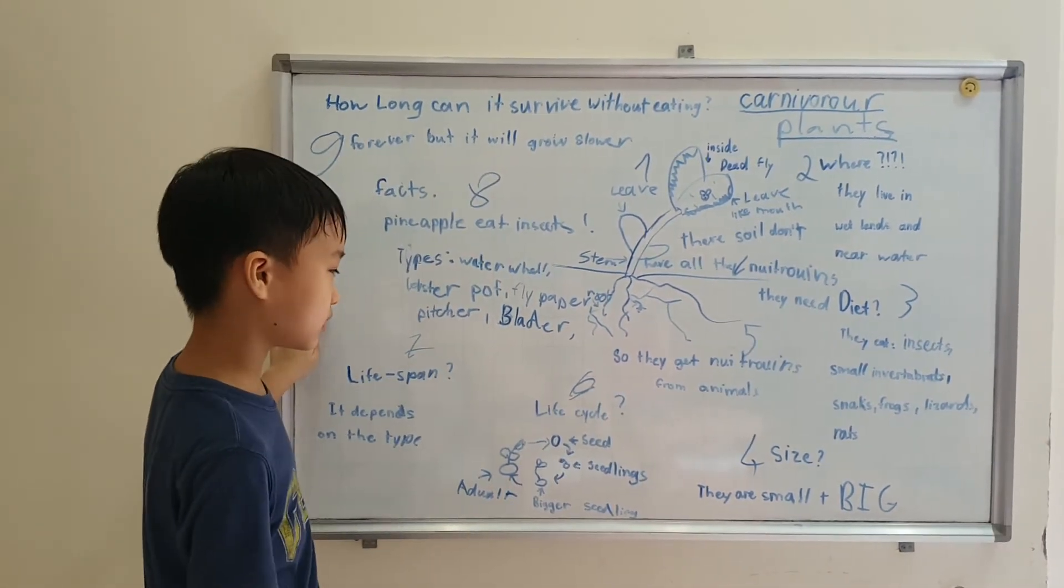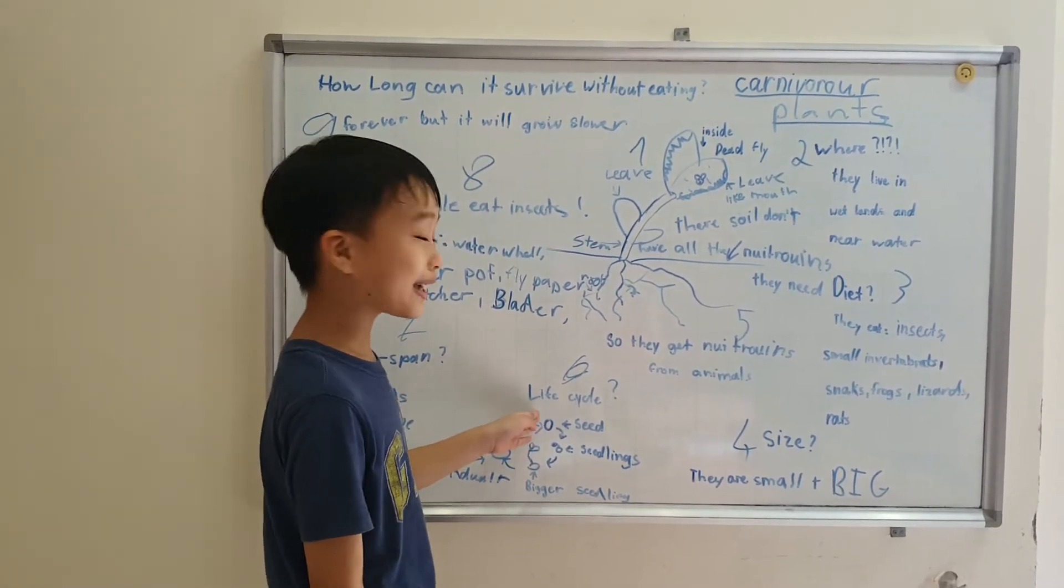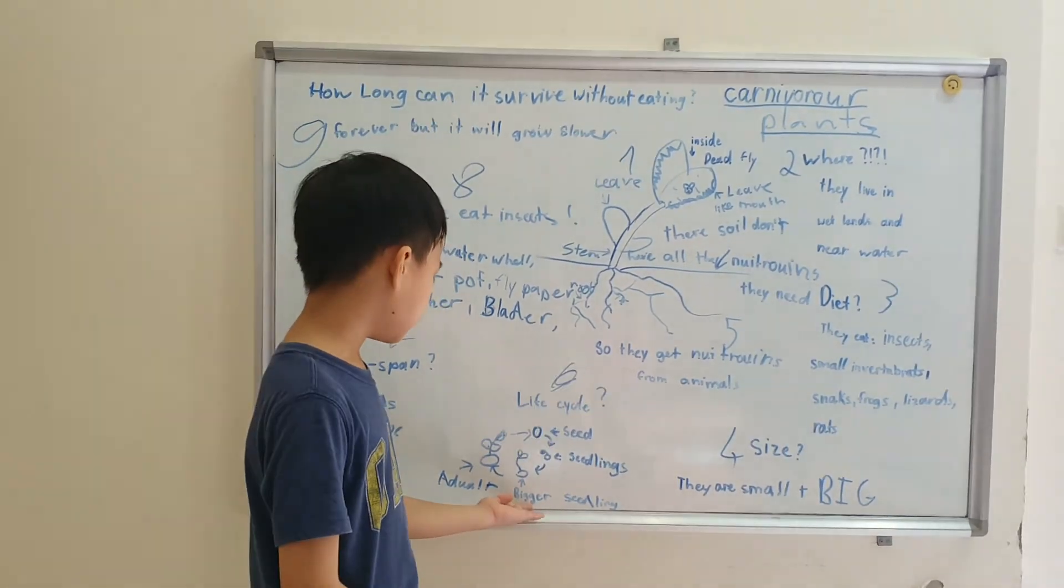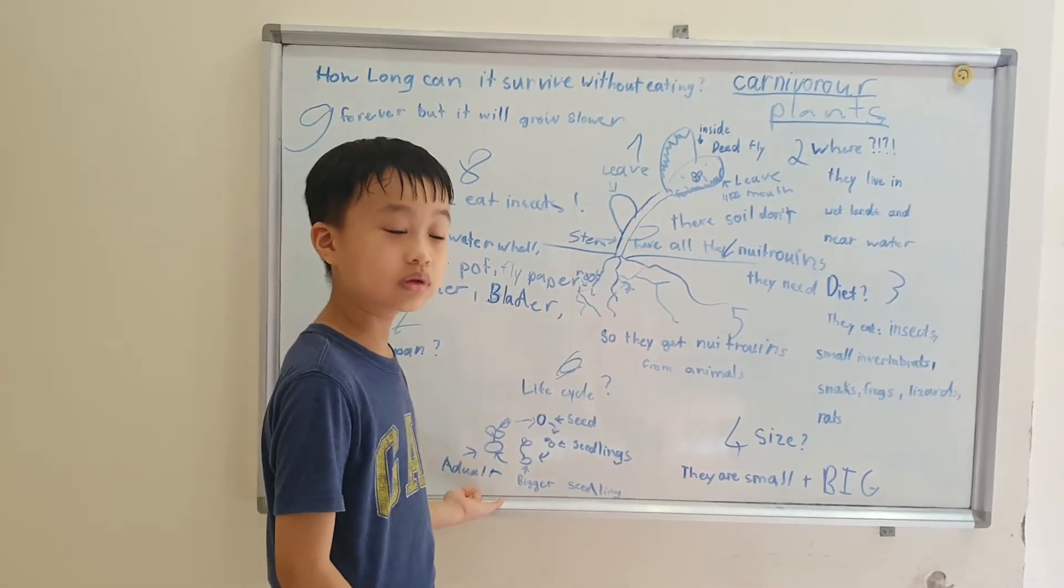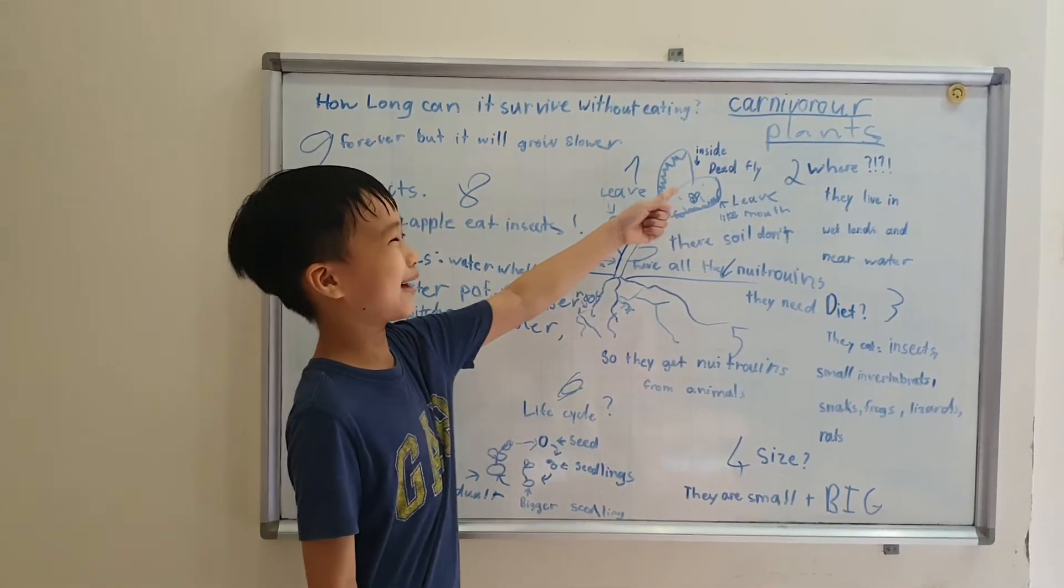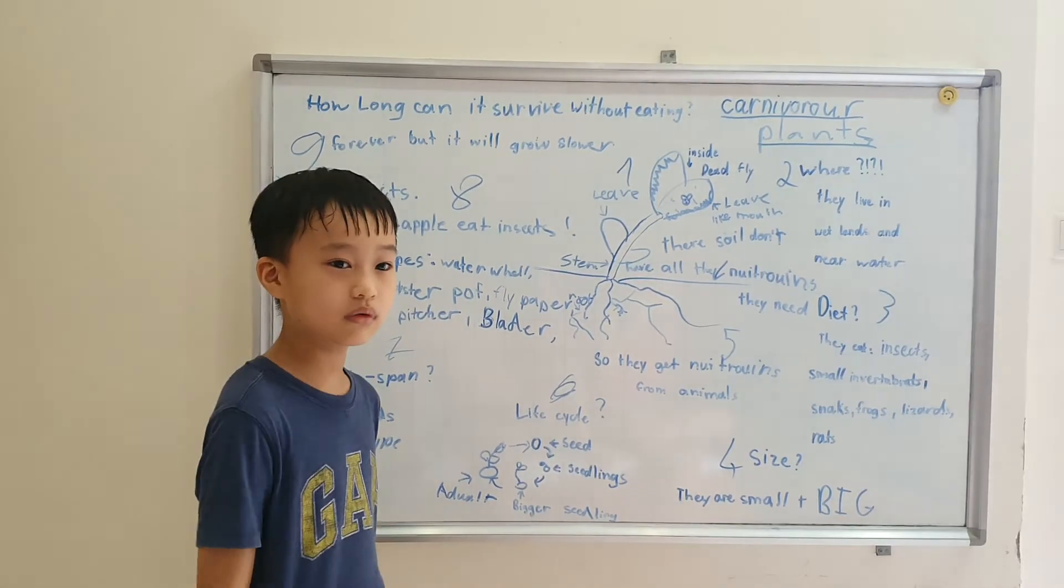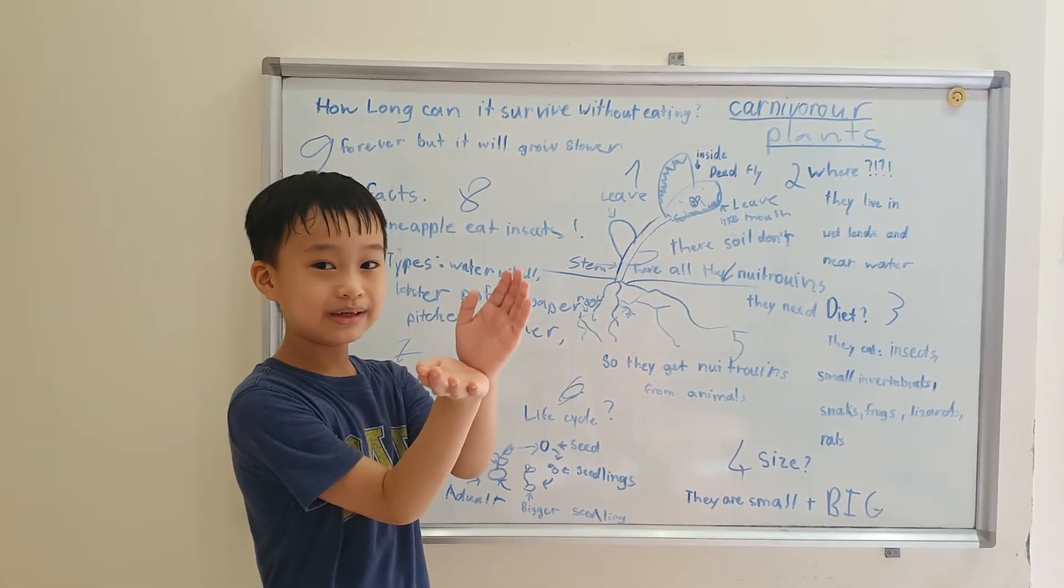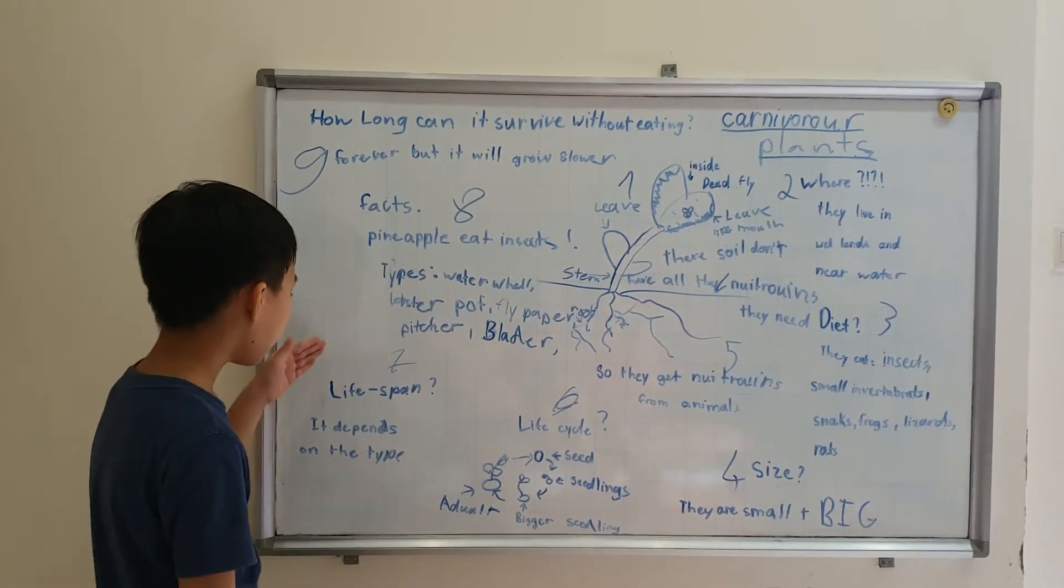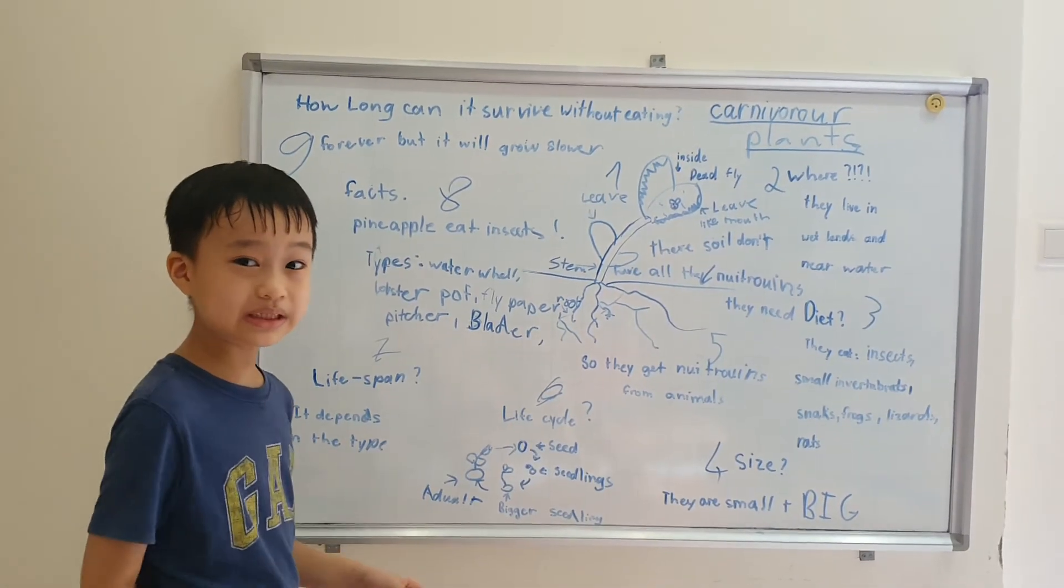They start from seed, seedlings, bigger seedlings. They are also called sprouts. And then to the adult it has the mouth trap.